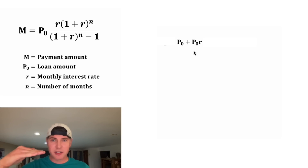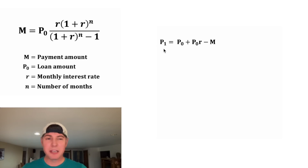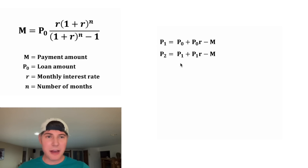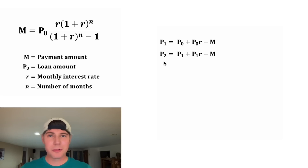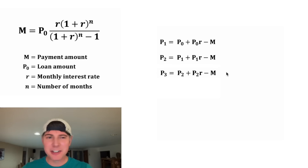Over the first month, interest is going to cause the loan amount to grow. We calculate that by multiplying the entire loan amount times the monthly interest rate. Then we subtract our monthly payment from the total amount, and that leaves us with P₁ — the amount after the first month. For the next month, we have P₁, it grows by P₁ times the monthly interest rate, then we subtract our monthly payment to get P₂. To get P₃, we take P₂, it grows by the interest rate times the loan amount, we subtract our monthly payment, giving us the loan amount at the end of the third month. And this pattern continues.